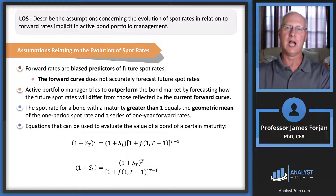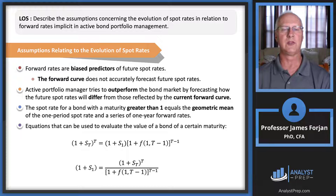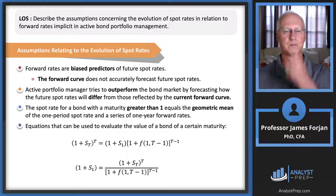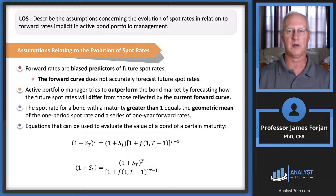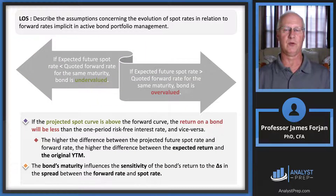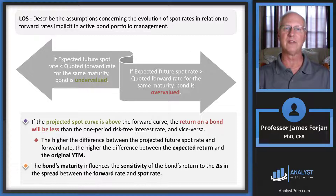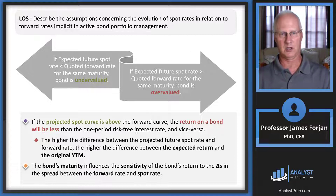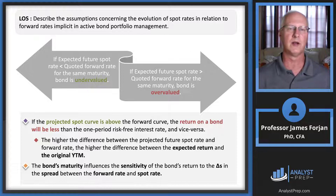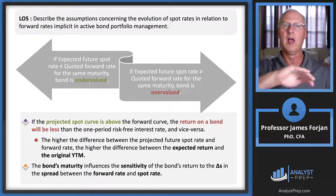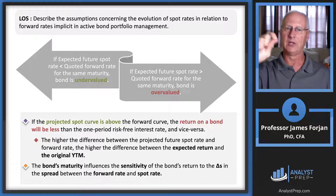Understanding geometric means is important here, and we'll revisit that when we get to the equity chapters on return computations. There are also equations for valuing bonds of known maturities. If the expected future spot rate is less than the quoted forward rate, the bond is undervalued; if the opposite occurs, the bond is overvalued. This is what we are trying to do as good financial analysts — using the spot curve and forward curve to estimate that difference.